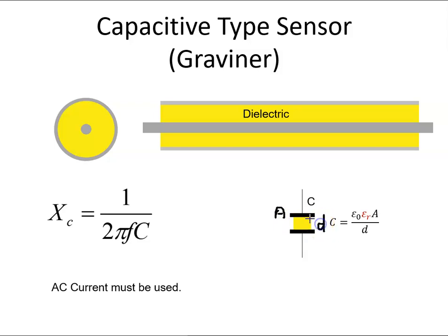The capacitance of the capacitor is the permittivity of free space times the relative permittivity times the area of the plates divided by the distance of the plates. The basis on which this Gravener type sensor works is that the dielectric here, its relative permittivity varies with temperature. So if the temperature increases, the relative permittivity increases.